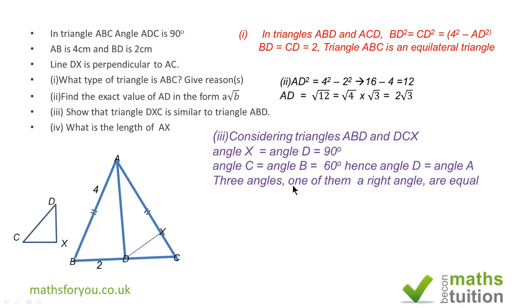Moving on, we want to show that triangle DXC is similar to triangle ABD. Now angle X in triangle DXC is equal to angle D in triangle ADB, and that's 90 degrees. Angle C in triangle DXC and angle B in triangle ADB is 60 degrees.